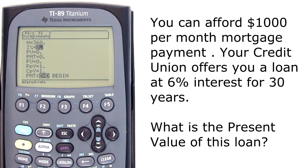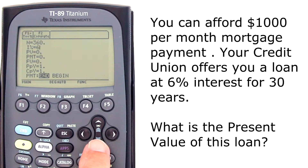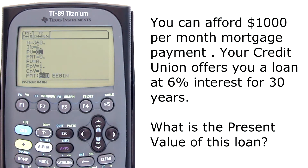I% is the interest rate. Do not convert this into a decimal — enter 6. PV is present value; that's the variable we are calculating for. We will come back to that later.